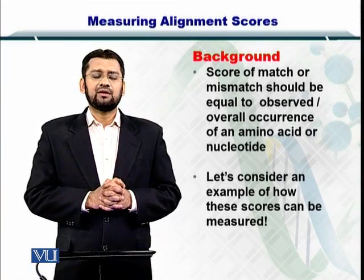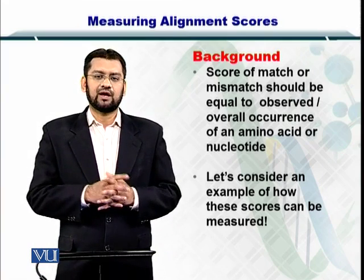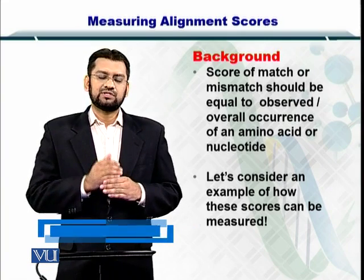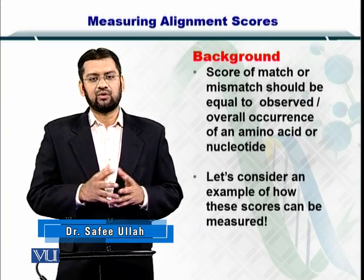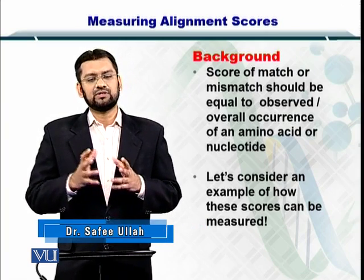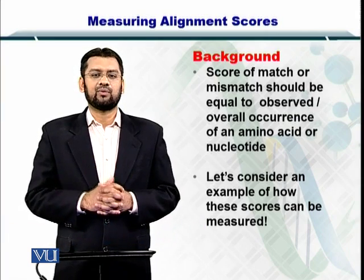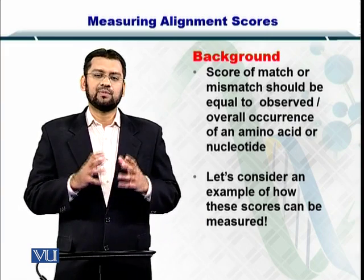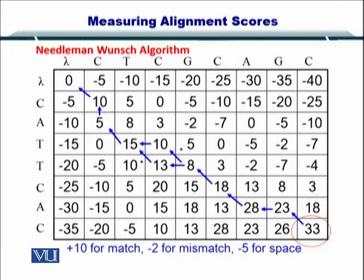We measure the overall occurrence of amino acids or nucleotides, and then we see which nucleotide can be replaced by which other more frequently, or which amino acid can be replaced by which other amino acid more frequently. This helps us to formulate a scoring scheme that is very useful.